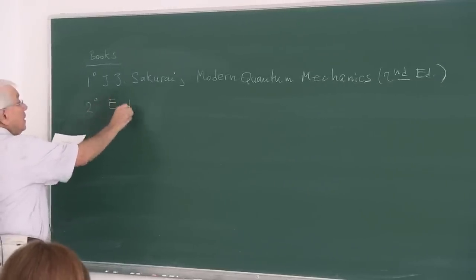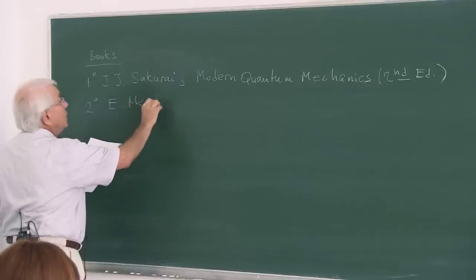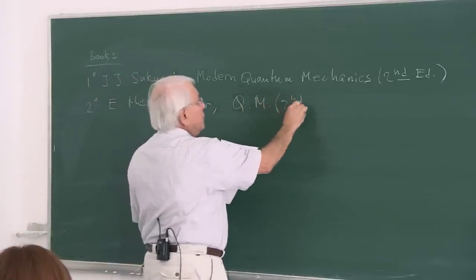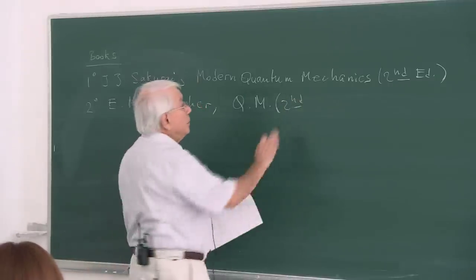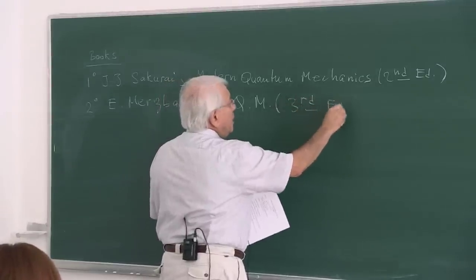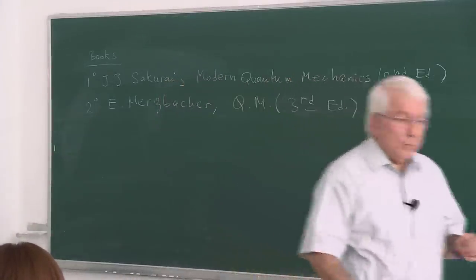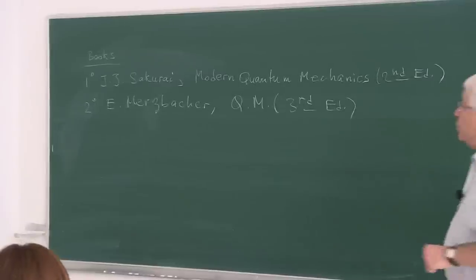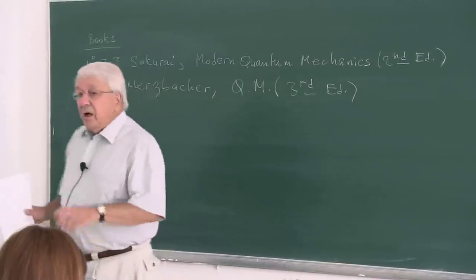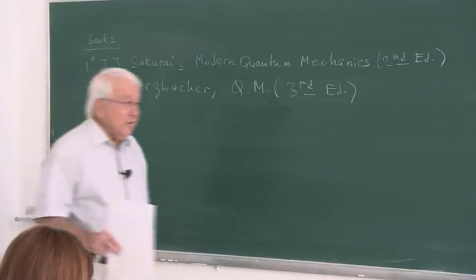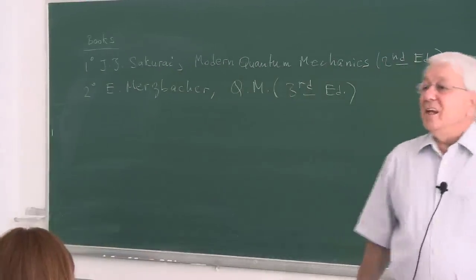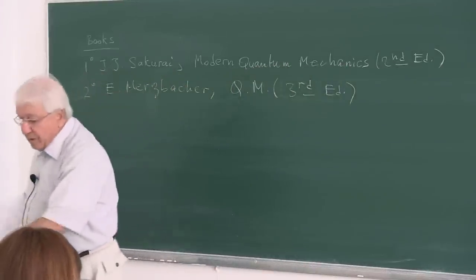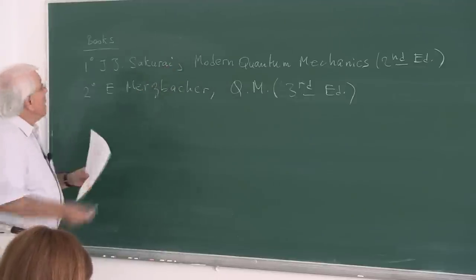The second one which might be useful is Eugene Merzbacher's Quantum Mechanics. The latest edition is the third, which is much better than previous ones because it's more developed — you may find it useful and I think we have copies in our bookstore. I used to teach from this book in the past, particularly for 507. Merzbacher had his undergraduate education in Turkey, which gave me some sympathy for him. These two are for the non-relativistic quantum mechanics part.